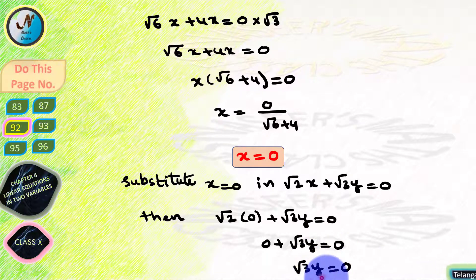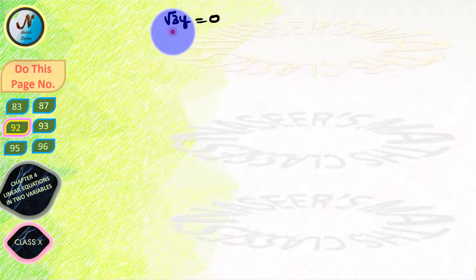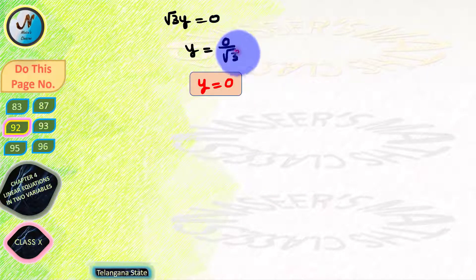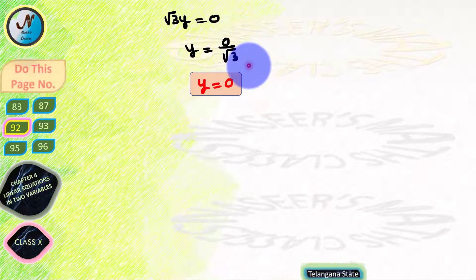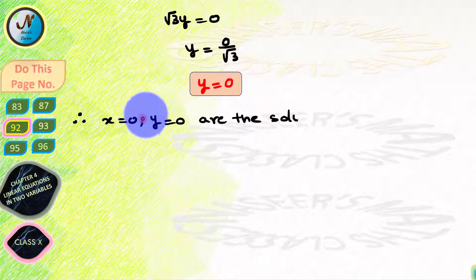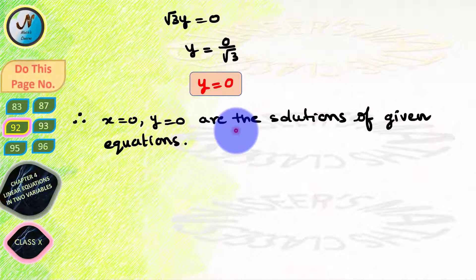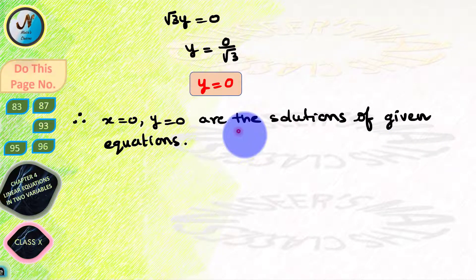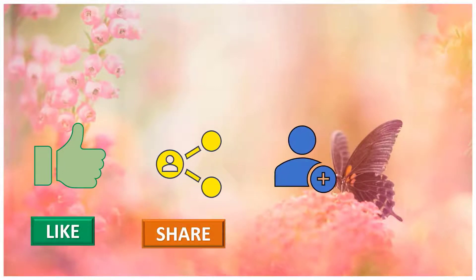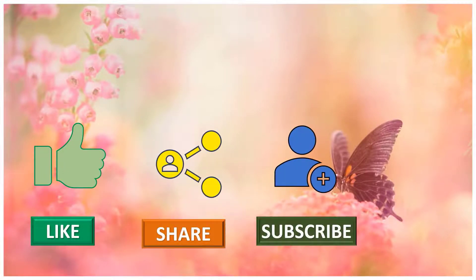Substituting x equals 0 in equation 1: root 2 into 0 plus root 3 y equals 0, giving root 3 y equals 0. Transposing root 3 to the denominator: y equals 0 by root 3 equals 0. Therefore x equals 0 and y equals 0 are the solutions of the given equations. Please like, share, and subscribe to our channel for latest updates by pressing the bell icon.